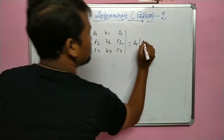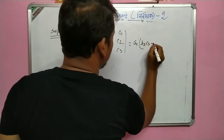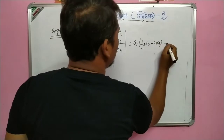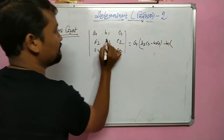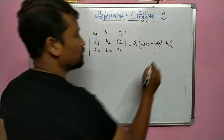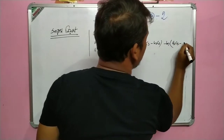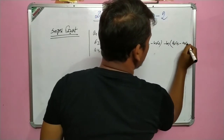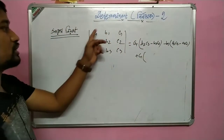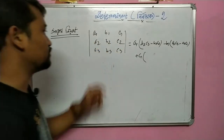Expanding along the first row: a1 multiplied by the minor (b2·c3 − b3·c2), minus b1 multiplied by (a2·c3 − a3·c2), plus c1 multiplied by (a2·b3 − a3·b2).